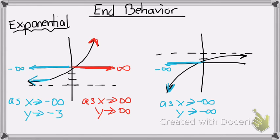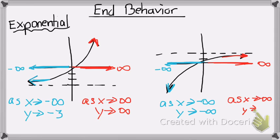Looking at the right side, my x values are going to be approaching positive infinity. So, as my x values are approaching positive infinity, let's see if my y values are going up or down. In this case, it's getting really close to the asymptote, so therefore it's approaching positive infinity. Thank you.